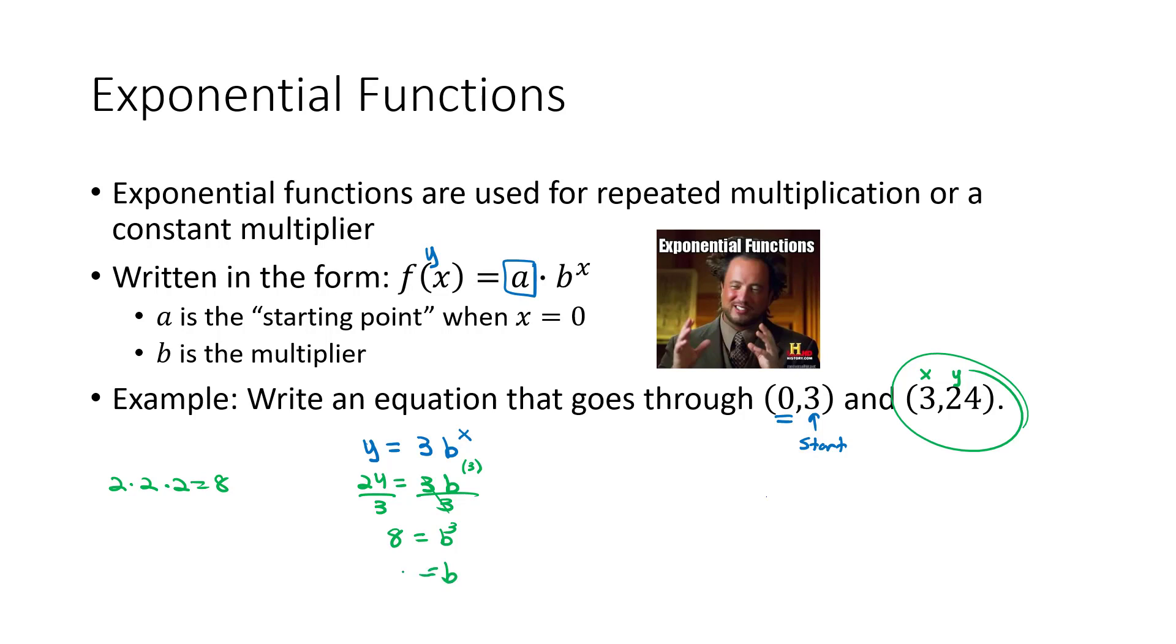So b must be equal to 2. And that gives us our function. Our function is f of x equals a, my starting point 3, times b, my multiplier, which is 2, raised to the x power. This is the function that goes through the point (0,3) and (3,24), and is an exponential function.